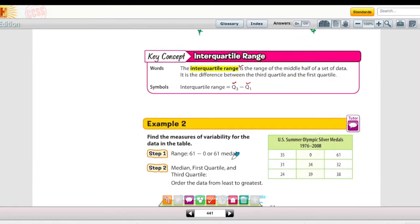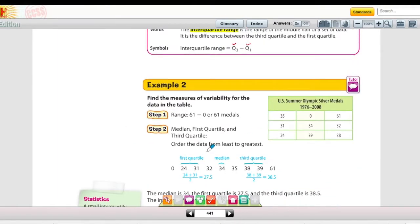So moving on down to Example 2, what you want to do when you're trying to find the measure of variability for the data is you want to start by finding the range, like we did in Example 1. We're just going to subtract the two numbers to find the range. Then we're going to order the data from least to greatest, remember that's how we find the median. And then we're going to take a look at the first quartile and the third quartile.